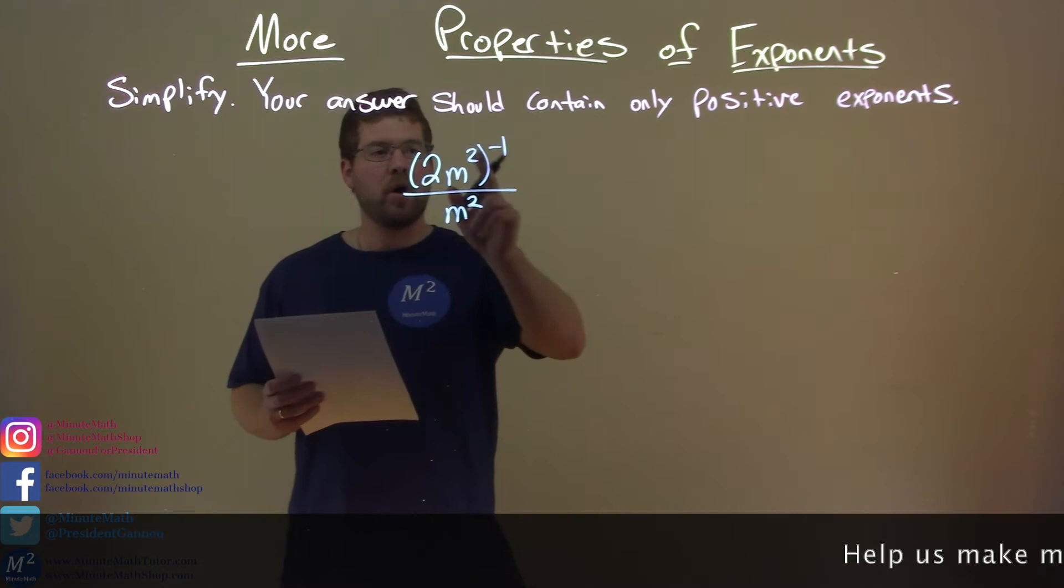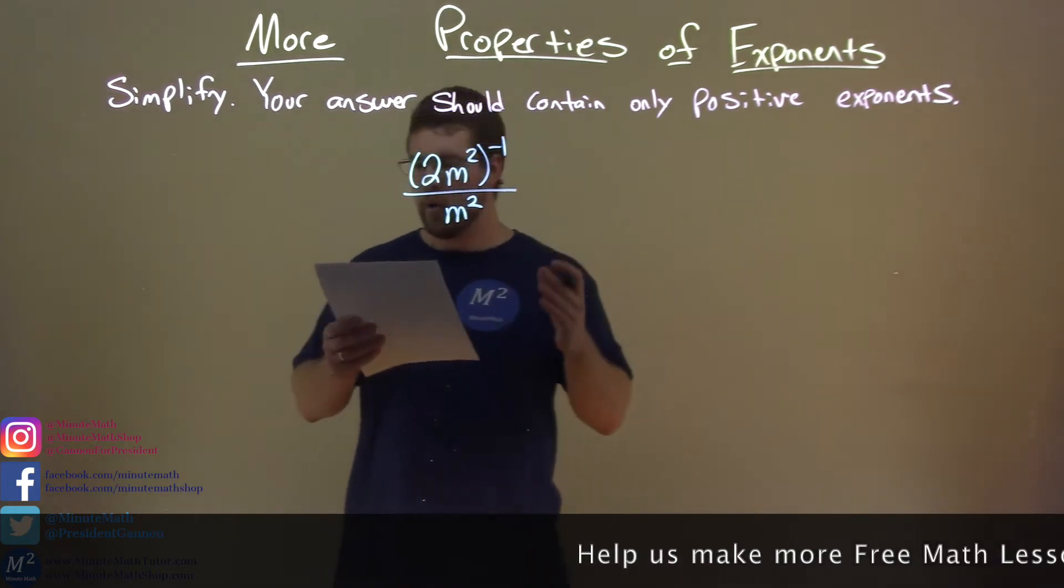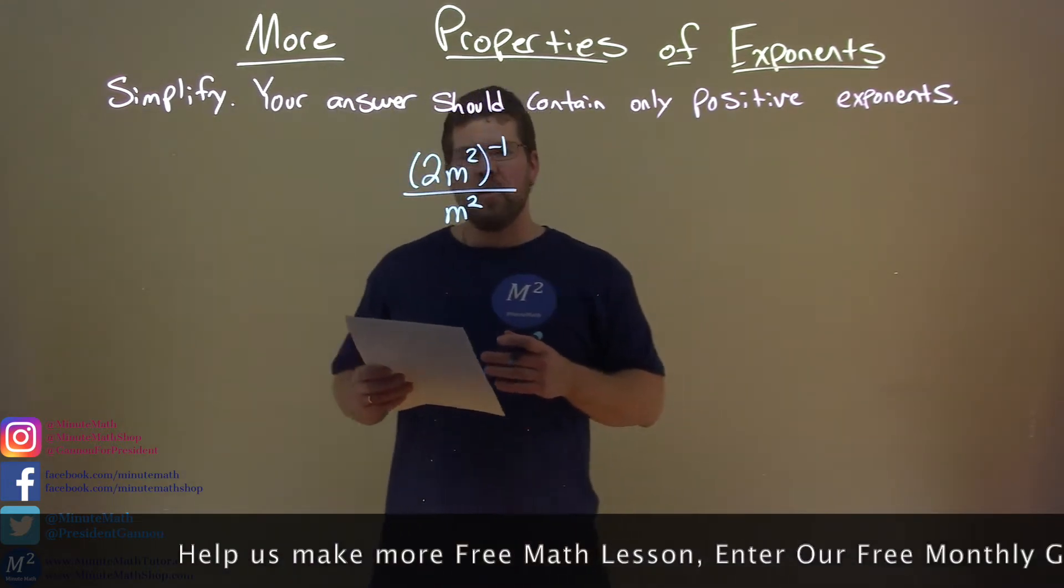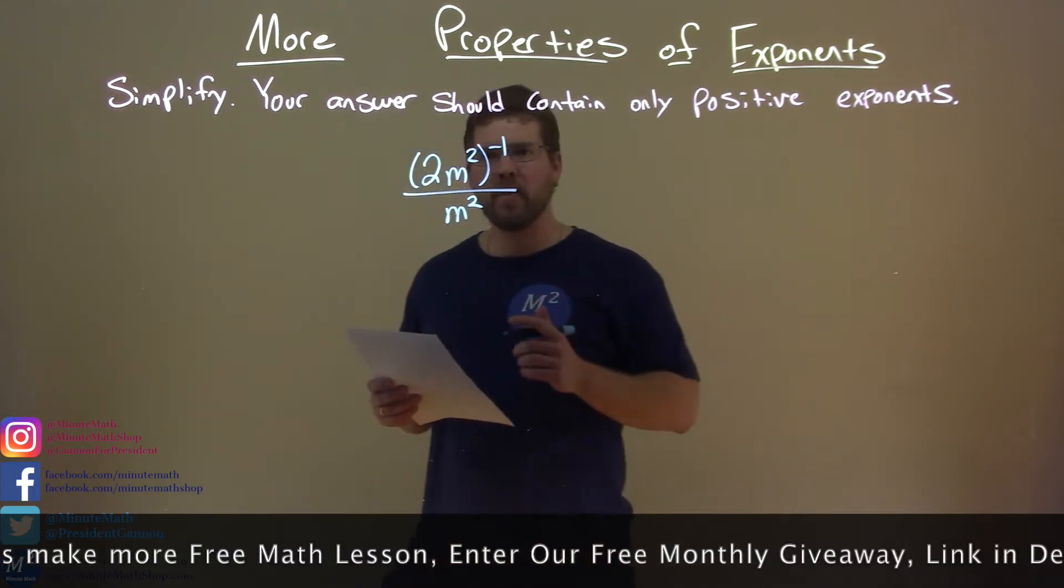2m squared all to the negative 1 power over m squared. Well, what should we do here? Well, this is what I'm going to do.